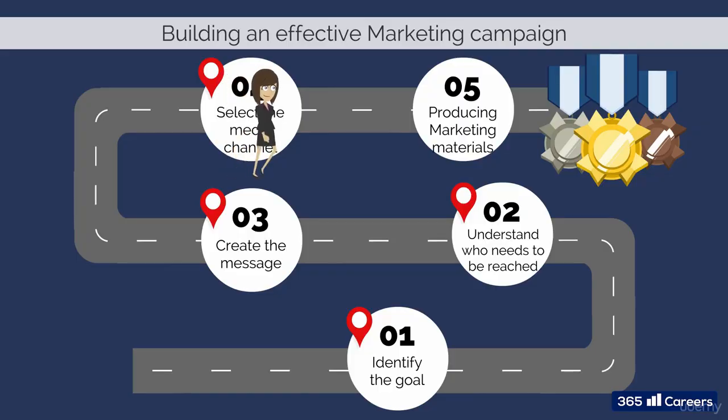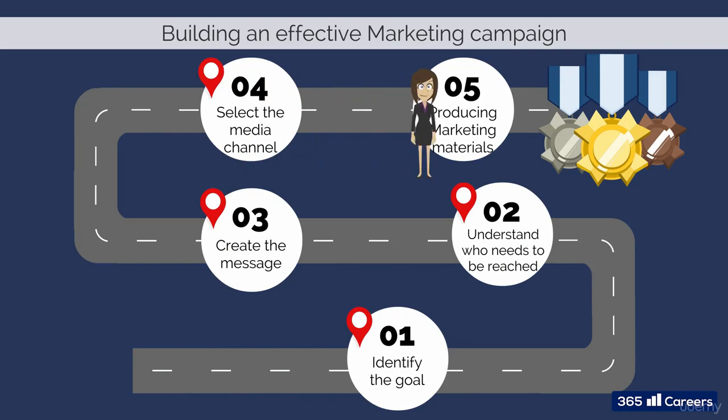Step number five consists of producing the marketing materials. If you've chosen TV, you must shoot a TV commercial. If you've chosen billboards or newspapers, you'll need a designer who can create a beautiful poster. Although most companies use the services of specialized agencies, this doesn't mean the marketing team is not involved. They have to give guidance and ensure the materials are in line with the message that must be delivered to customers.